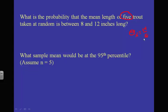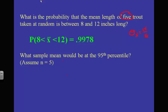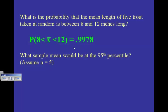Our standard deviation for x-bar is now 1.4 divided by the square root of 5 — much smaller than before. The probability that x-bar is between 8 and 12 is 0.9978, much bigger than before because the distribution is much less spread out. Instead of a single trout, we're asking about the mean of 5 trout being between 8 and 12.